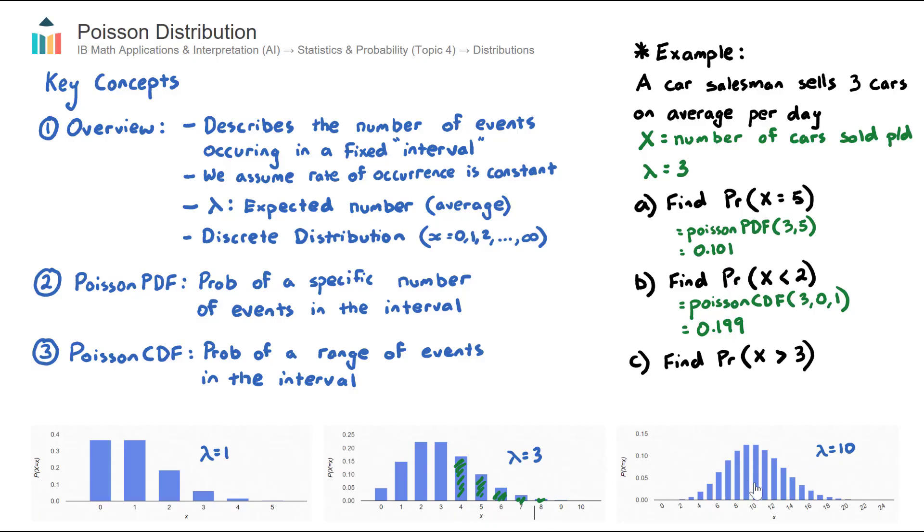As opposed to when lambda was 10, and the probabilities are clustered about that expected number, then you do get decent probabilities up at sort of 16, 20, but it depends on the lambda number here.